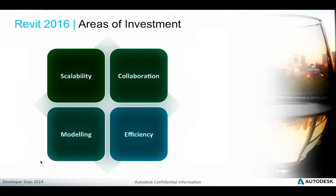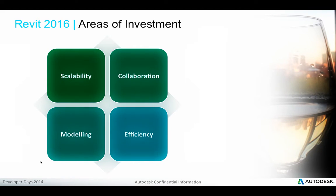The rest of the topics on new functionality are arranged around four main areas of investment: scalability — how to handle larger amounts of data in ever bigger, more complex projects; collaboration — working with ever bigger teams in more distributed locations across multiple domains; modeling of elements — accessing more detailed geometry, more element data, and everyday interaction with geometry, shapes and elements; and finally, everyday efficiency for the end user in working with the Revit user interface.